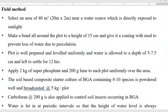Now we look at the field method in which BGA is multiplied. In this method, an area of 40 m² is selected near a water source, with dimensions of 20 m x 2 m, and it should be directly exposed to sunlight, as sunlight is very important for mass multiplication of BGA since they are carbon and nitrogen fixers. Make a bund all around the plot to a height of 15 cm and give it a coating of mud to prevent water loss due to percolation. The plot is well prepared and leveled uniformly and water is allowed to stand to a depth of 5 to 7.5 cm and left to settle — soil particles are allowed to settle for 12 hours.